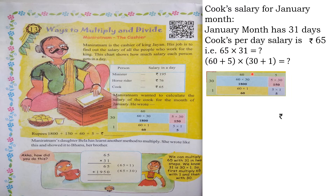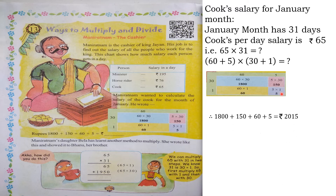He multiplied 30 × 60 to get 1800, then 30 × 5 to get 150, then 1 × 60 to get 60, and 1 × 5 to get 5. Now he totals all four results: 1800 + 150 + 60 + 5 = rupees 2015. So you can see that the answer is rupees 2015. This is the first method of multiplication — breaking down both numbers into their expanded forms.